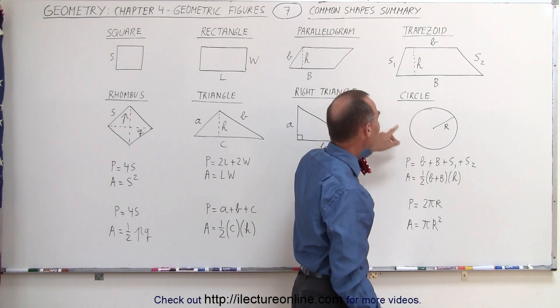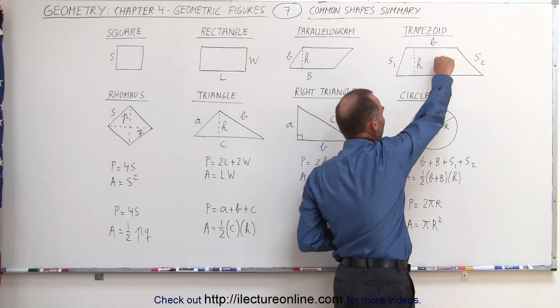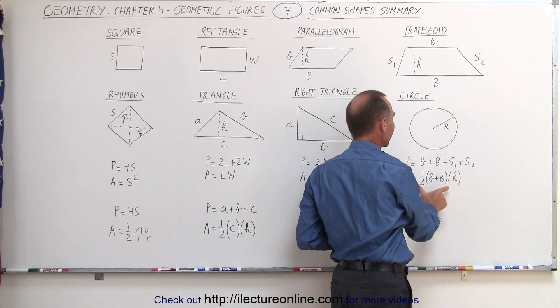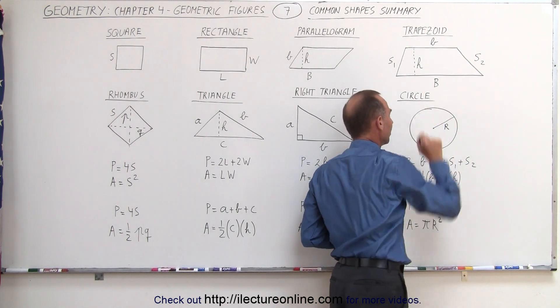The area is one-half the average length of big B and small b. That would be one-half b plus B. That's the average length times the height for the area.